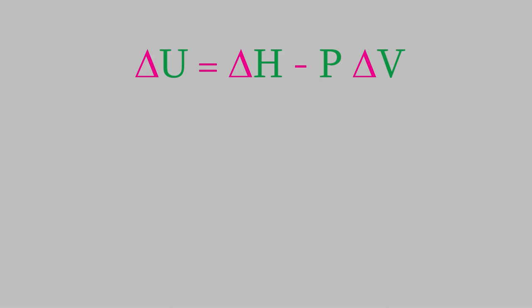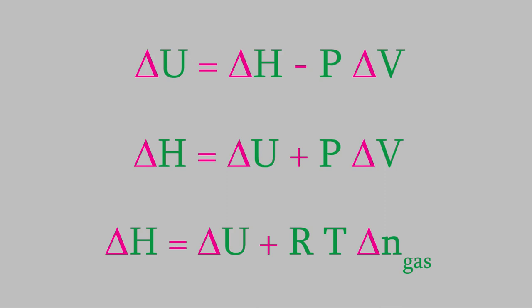Sometimes, what we really want to calculate is the enthalpy change that occurs during a reaction, not the energy. In that case, we can rewrite this equation to put the enthalpy on the left side of the equation, which gives us this. If the process we're studying involves ideal gases, we can rewrite P delta V as RT delta N, where the delta N involves only the change in the moles of the gases in our reaction. You'll use this equation when you perform a bomb calorimetry experiment.